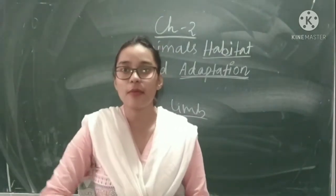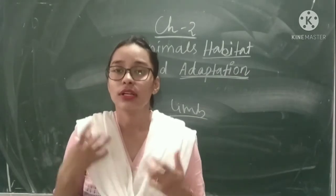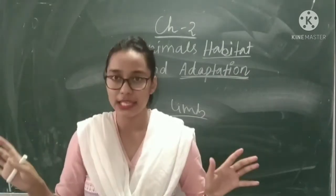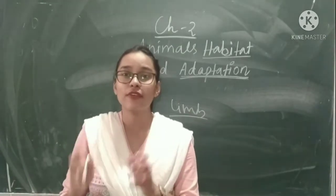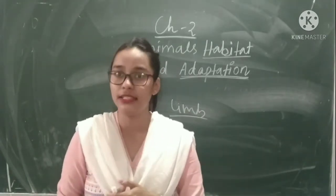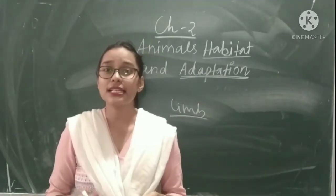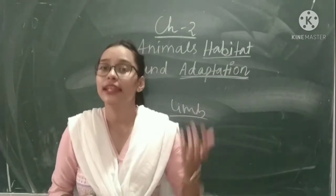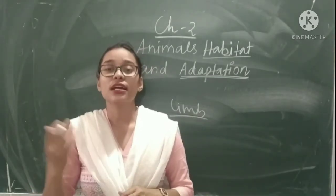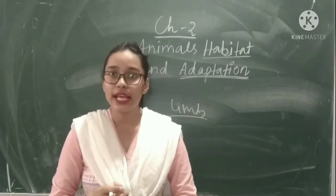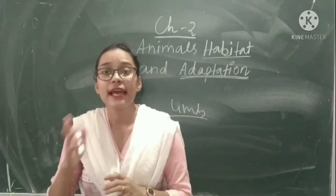Now we will discuss about desert. When we talk about desert, it is a dry area with very scanty rainfall — the amount of rainfall is very less. Deserts are usually scorching hot during daytime and very cold during nighttime. Some animals which can survive in this habitat are camel, kangaroo rat, and rattlesnake.